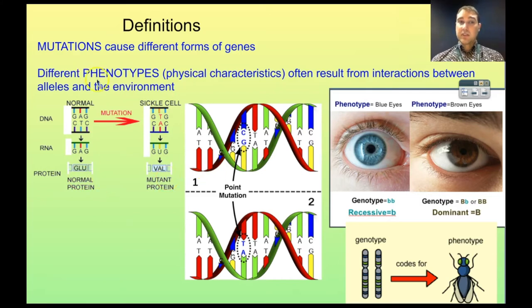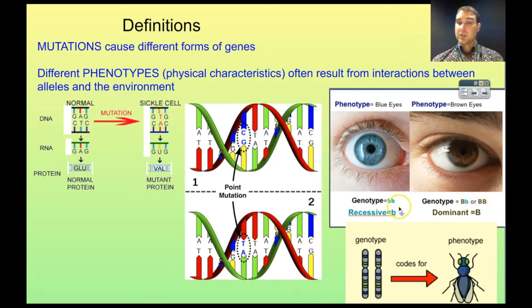A phenotype is what you see as a result of the expression of a gene. We talked about blue eyes and brown eyes — that is the phenotype. The genotype is what genes you have, which allele combination you have. The phenotype is what you see.